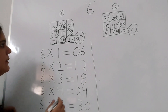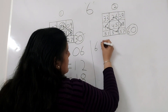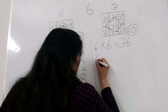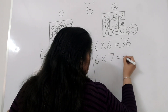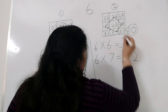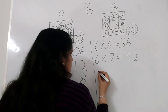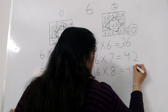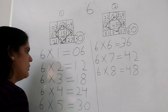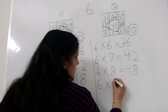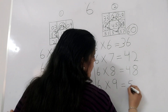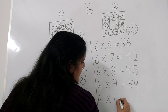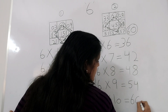Now we will move on to the next grid. 6 times 6 is equal to 36. 6 times 7 is equal to 42. I am using these diamond shape numbers here. 6 times 8 is equal to 48. 6 times 9 is equal to 54. And 6 times 10 is equal to 60. That is the last number.